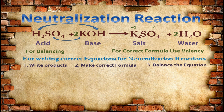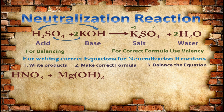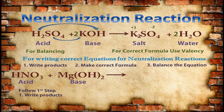Let's do one more example. HNO₃, which is nitric acid, and Mg(OH)₂, magnesium hydroxide, which is a base. When these two react, follow the three steps. First, according to double displacement reaction, make the formula of the salt. The formula of the salt will be Mg(NO₃) and the formula of water is H₂O.